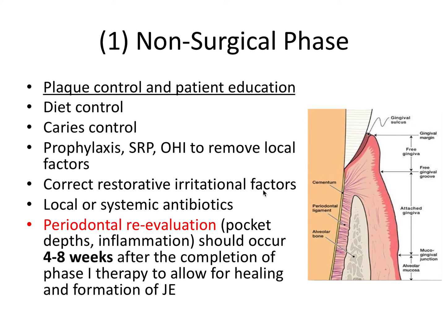Phase one also involves correcting restorative irritational factors, as we discussed in the local factors video, including overhanging margins and restorations that need adjustment to remove food retention areas, food impaction areas, or rough spots accumulating extra plaque. This can also involve local or systemic antibiotic prescription. The periodontal re-evaluation is very important and should occur four to eight weeks after completion of all phase one therapy.